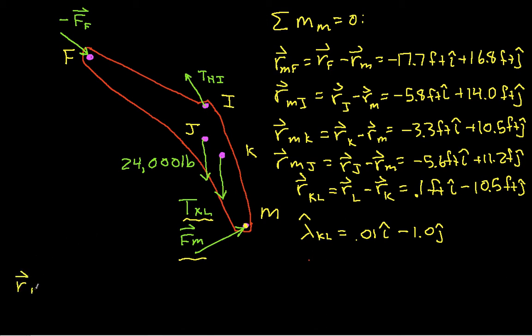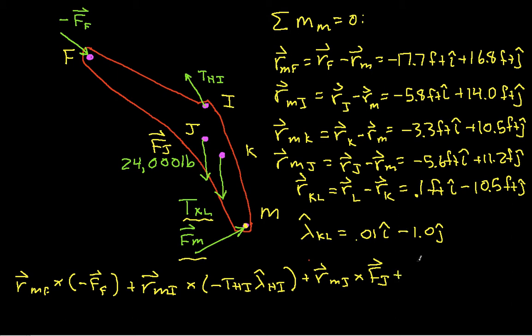So we'll have R-M-F cross minus F-F plus R-M-I cross minus T-H-I lambda-hat H-I, plus R-M-J cross F-J. I'll call this weight vector F-J, plus R-M-K cross T-K-L lambda-hat K-L. And this is equal to zero.